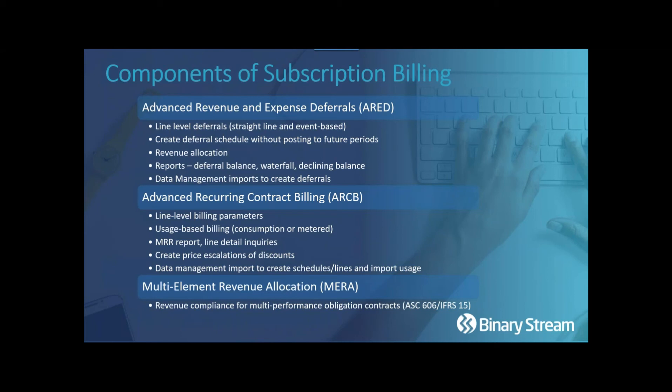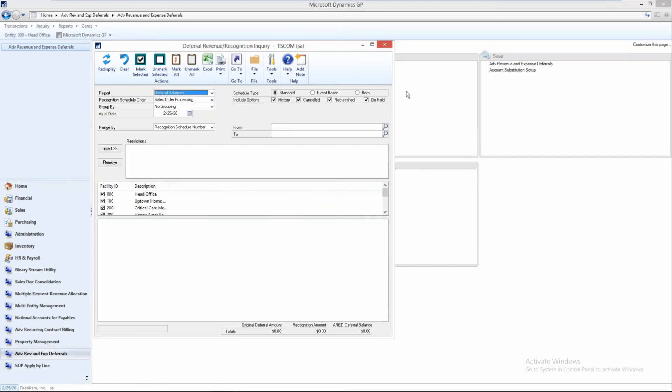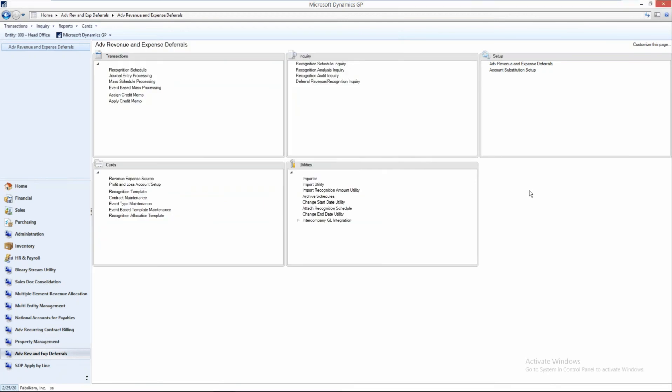That last component — the multi-element revenue allocation — is our MIRA piece. That's the portion that brings compliance with ASC 606, IFRS 15, and really the performance obligations around free items or bundled items in a contract. Neil does a far better job of describing it, so I won't take any of his thunder. So that's advanced recurring contract billing, advanced recurring expense deferrals — all together the subscription billing suite in Dynamics GP.